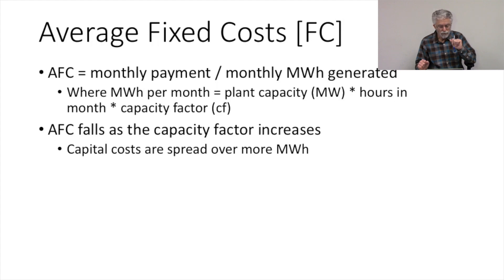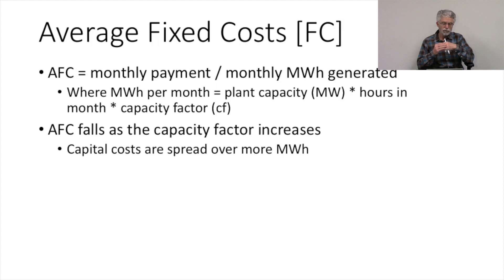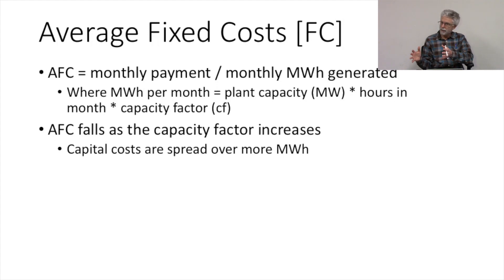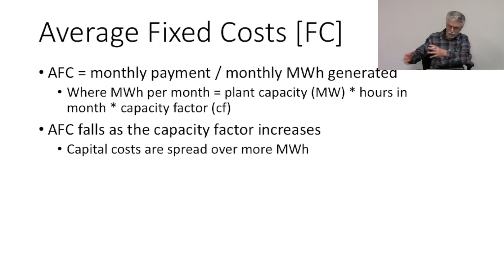Next we want to think about those fixed costs. We're going to think about fixed costs in terms of the amount of megawatt hours generated in a given month. To calculate average fixed costs, we take our full monthly payment and divide it by the number of megawatt hours we generate. That gives us dollars per megawatt hour, or rupees per megawatt hour, depending on whatever currency we're working in.